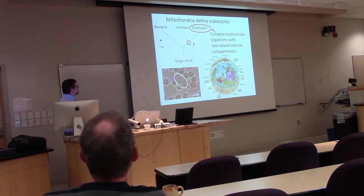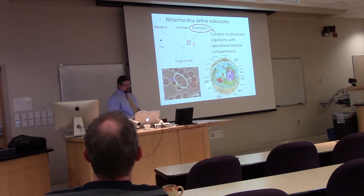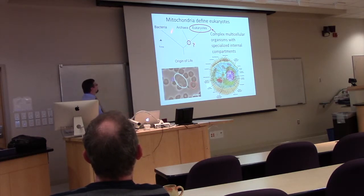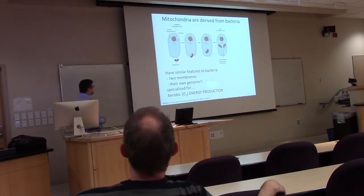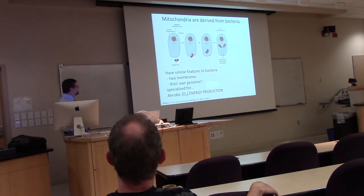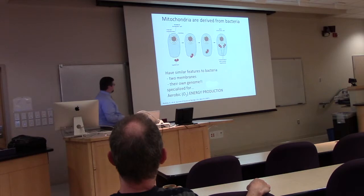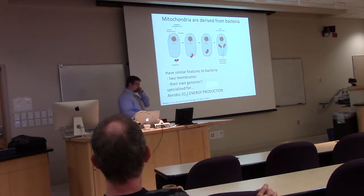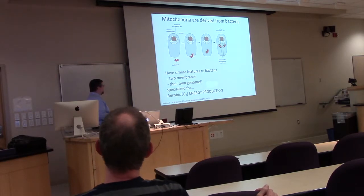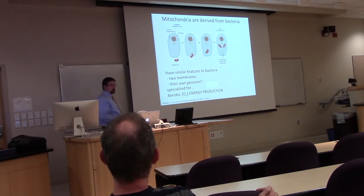Eukaryotes had to acquire a system for generating energy. Evidence indicates that at this point in evolution, an endosymbiotic event occurred where a bacterium and likely an anaerobic archaeal progenitor combined to form the eukaryotic line. Mitochondria are derived from bacteria. It is thought that a bacterium was engulfed and became specialized for energy production. Mitochondria share many features with bacterial ancestors: two membranes, their own genome, and the machinery to replicate, transcribe, and translate products from that genome. They're specialized for aerobic energy production.